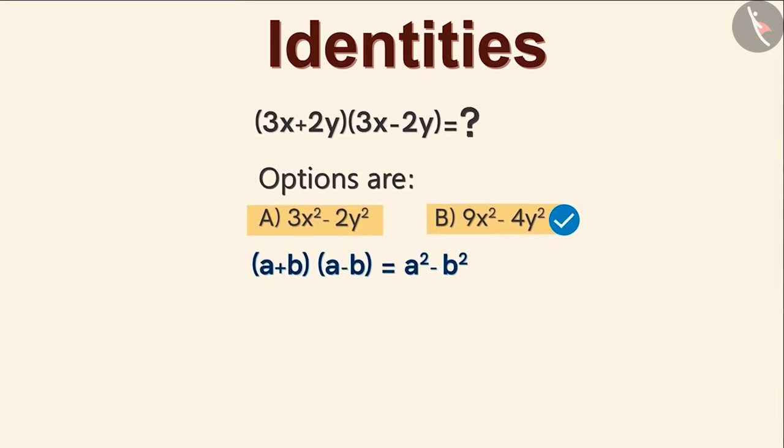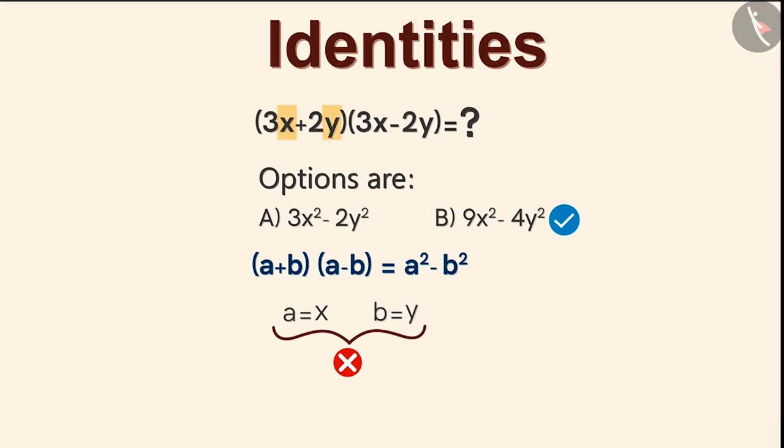We know that we have to use this identity in order to find the answer, but what should we take in the place of A and B? This is where we make a mistake. We take A as x and B as y, so we get this. Now we just multiply these coefficients like this, so we get option A as the answer.